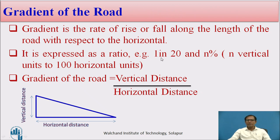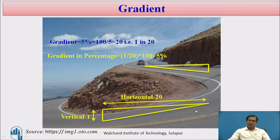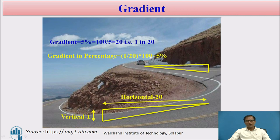So 1 in 20 means 1 vertical and 20 horizontal. Another picture depicted here shows how we measure the gradient for a particular stretch. Here you can see a falling gradient — the vertical over the horizontal gives you the grade provided. If the horizontal is 10 meters, then the vertical upon 10 gives the slope for that stretch. You can calculate this as 5% or 1 in 20, and there are many ways we can represent the gradient.